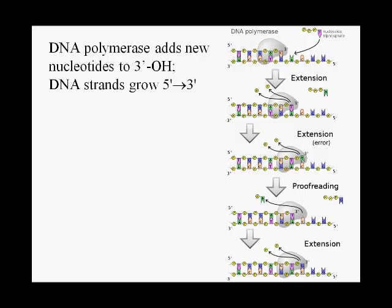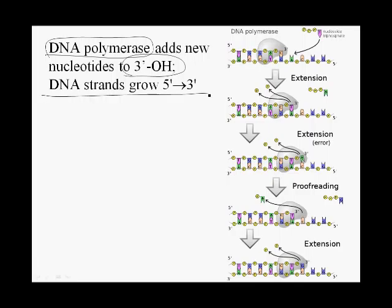Now let's talk about the details of DNA replication and the enzymes. The enzyme that does DNA replication — that makes DNA — is called DNA polymerase. Polymerase meaning it makes polymers; if it makes a DNA polymer, it's the enzyme that makes DNA. Here is a key statement to remember: all DNA polymerases, regardless of whether they're from bacteria, eukaryotes, archaea, or viruses — all known DNA polymerases do the same thing. They add new nucleotides only to a pre-existing 3' hydroxyl end, meaning DNA strands on Earth are capable of growing only from 5' to 3'.